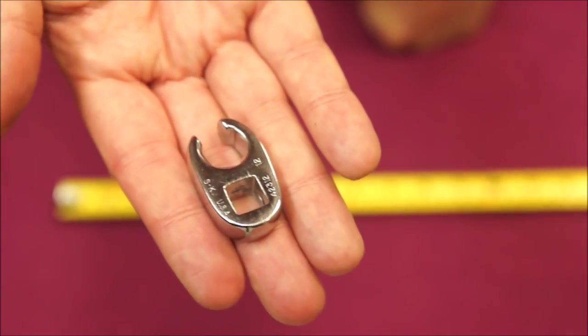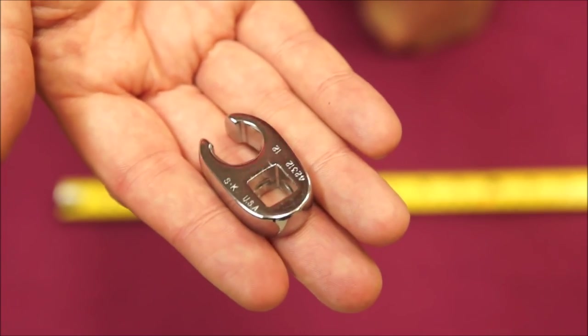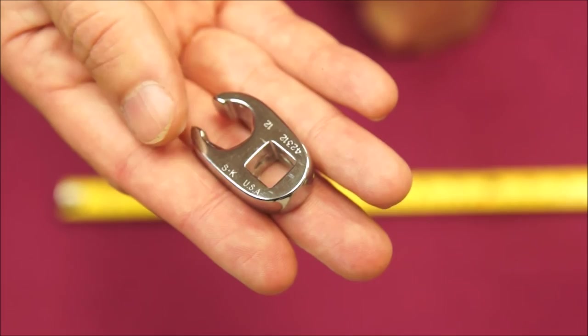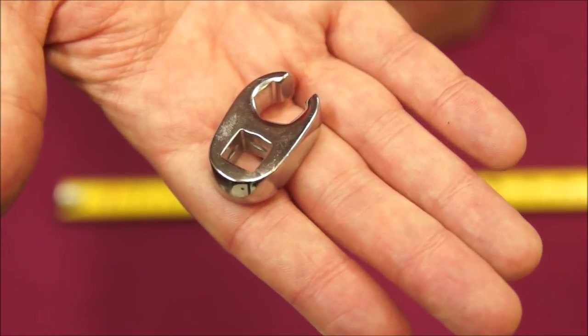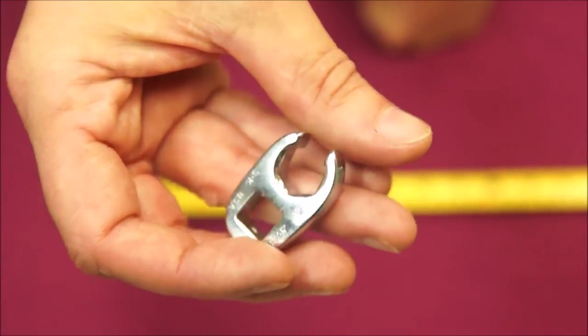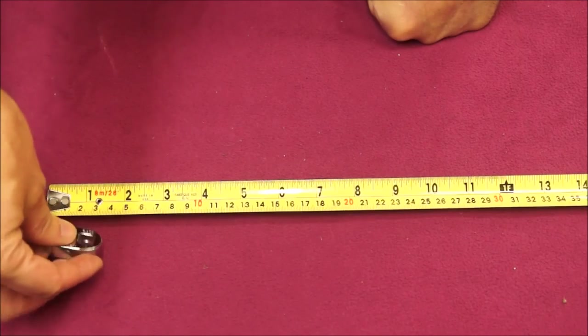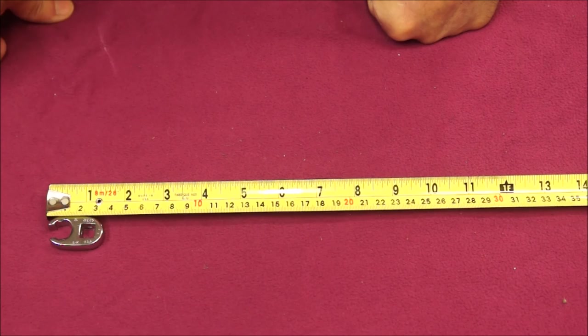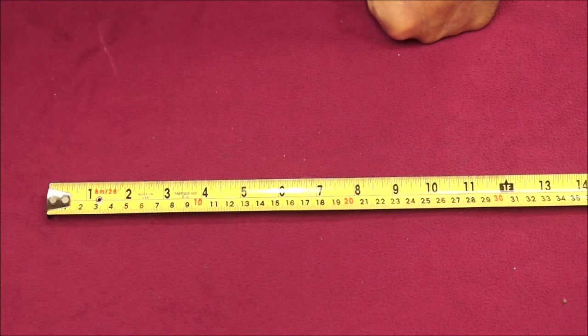And last is the SK crow's foot flare nut type. Again these are made in the USA. This is a 12 millimeter size and three-eighths drive on the square. So that's my 12 millimeter wrench size comparison and what I keep here. I'd like to know everyone else's favorites and what you like about them, what you dislike about them. Post down and let me know, thanks for watching.